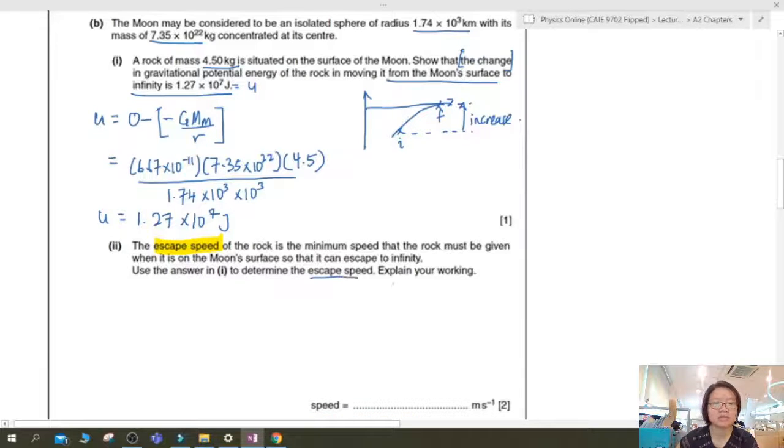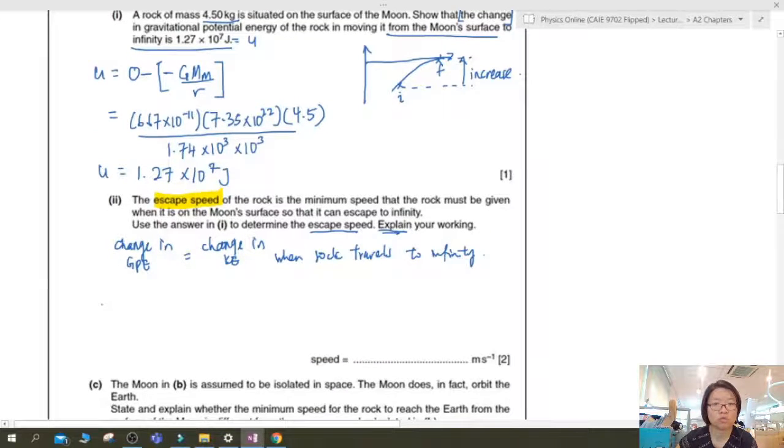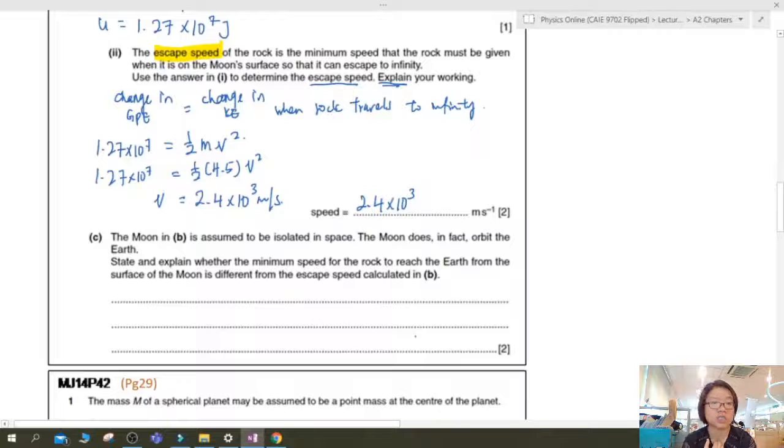All right, next part. The escape speed of the rock is the minimum speed that the rock must be given so that it can escape to infinity. Determine your escape speed. Explain your working. Well, the change in GPE will be equal to the change in KE when the rock travels to infinity. So you should have enough energy to travel to infinity, as mentioned in the previous lecture video. So now I know the change in GPE when it travels to infinity. So I can use half mv square minus zero. Because minimum speed, we assume when you reach infinity, your speed is zero. So just solving this equation should give you the speed.